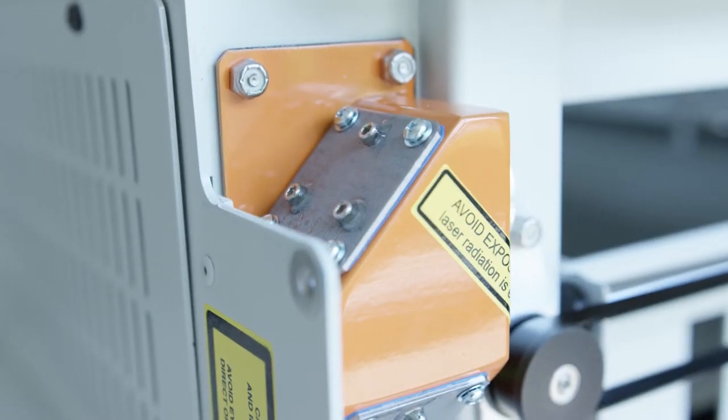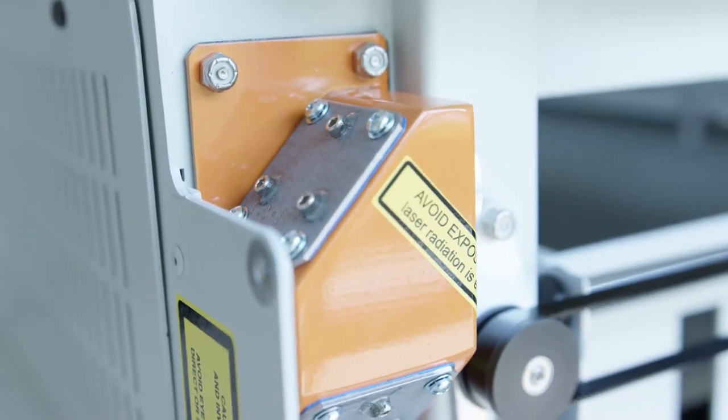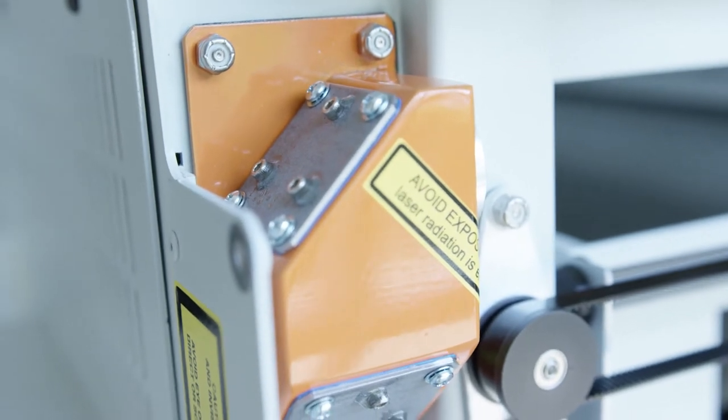The Epilog Mini and Helix's optics system includes four mirrors, an optical window, and a lens.